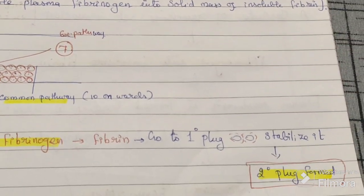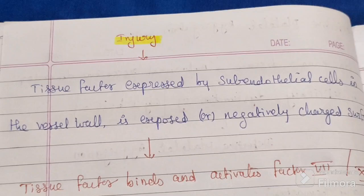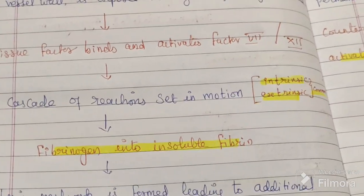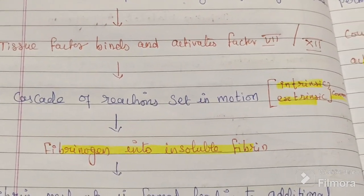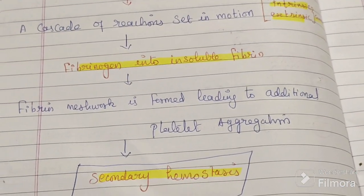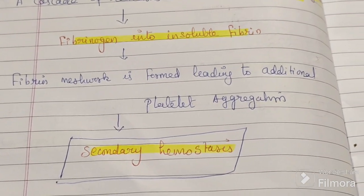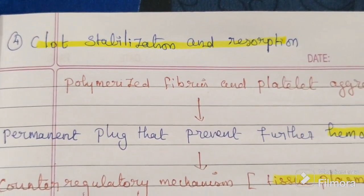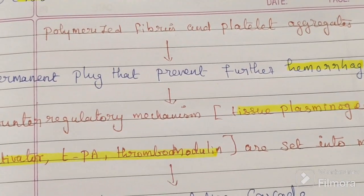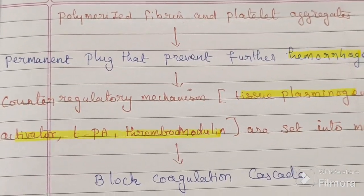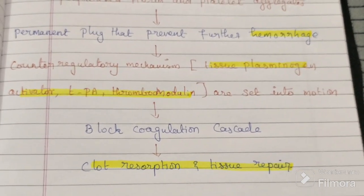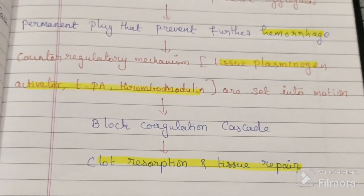Ultimately, fibrinogen is converted into fibrin, and platelet aggregation completes the secondary hemostasis process. The last step is clot stabilization: healing takes place because of the formation of primary and secondary clots. Antithrombotic factors are then required to remove the clot, and clot reabsorption and tissue repair take place.